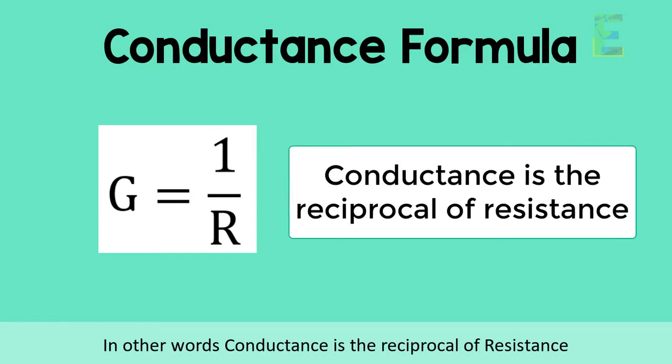So now let's have this problem: a particular circuit element has a resistance of 5 ohms, calculate its conductance.